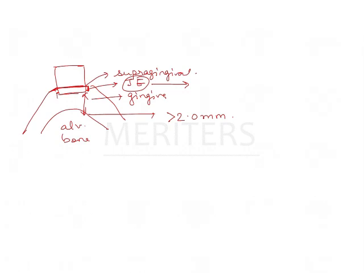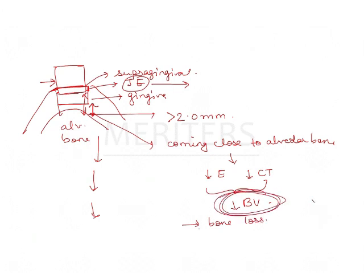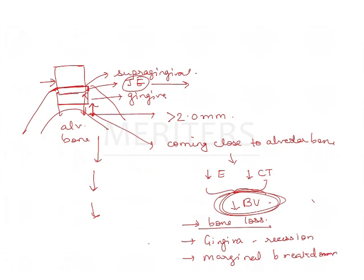But suppose you want to go deeper and place the margin here because tooth structure is less — here you are reducing the junctional epithelium considerably and coming close to the alveolar bone. Because you are coming close to the alveolar bone, there is reduction in the epithelium, connective tissue, and biologic width. The body's response will be to take the alveolar bone away from the tooth, causing bone loss. The gingiva will keep receding, leading to marginal breakdown, prosthetic failure, and periodontal failure.